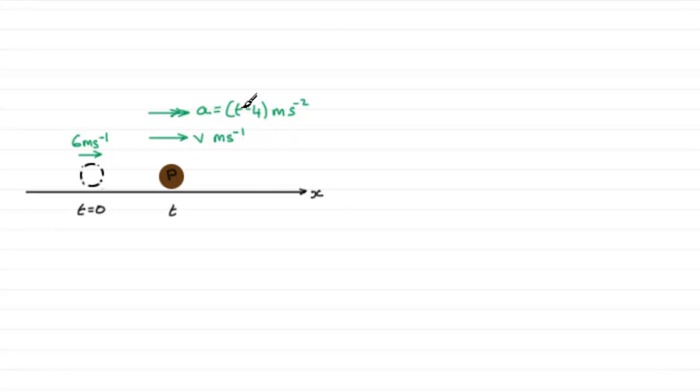The acceleration of P at time t seconds is (t - 4) meters per second squared in the positive x direction. You can see I've labeled the positive x direction here, so we've got it accelerating in that direction. We're also told that the velocity of P at time t seconds is v meters per second.